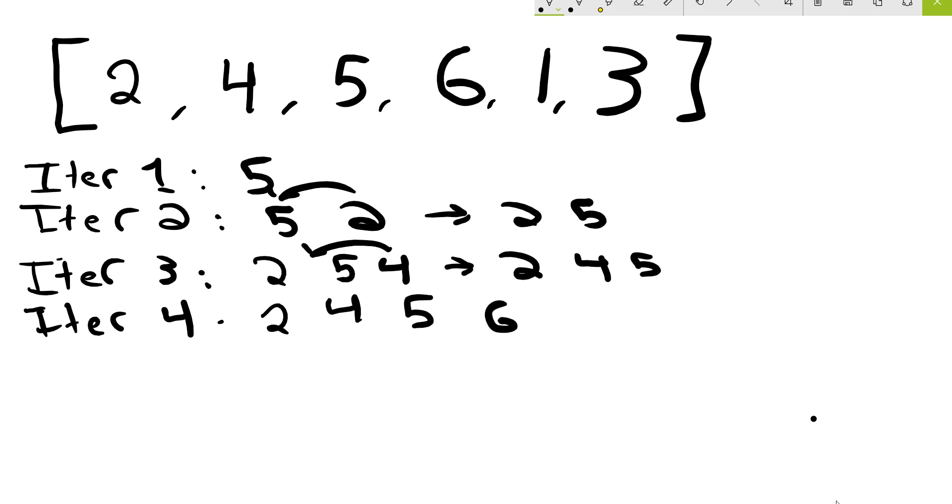So now let's look at this 1. This 1 is smaller than anything we've seen before and we have our first 4 numbers already sorted. So we have 2, 4, 5, 6, 1. Well, you're going to have to swap this.